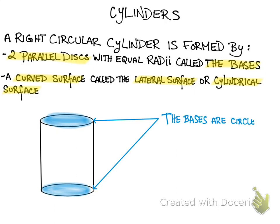So these two blue parts are the bases of the cylinder. Because they are circles, we can use the formula C equals 2 pi r to find the circumference of each circle. We can also use the formula A equals pi r squared to find the area of each blue circle.